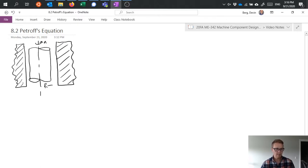So we have a bearing or a shaft of radius R and of course diameter D, and we have a clearance gap here which we'll call C and the length of the whole thing is L.